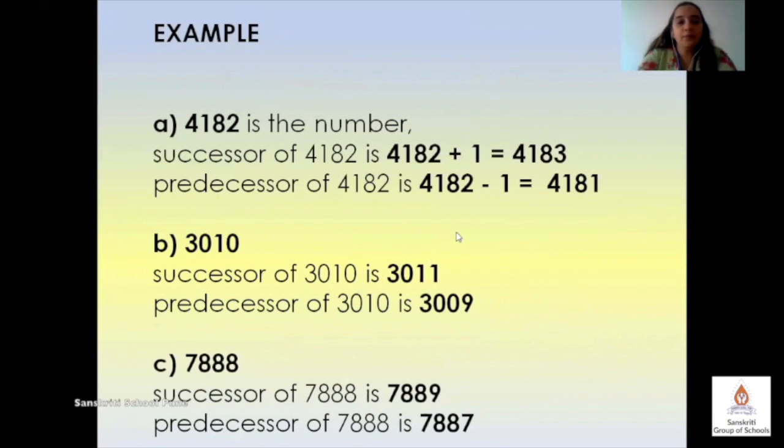Now here are some more examples. Look at this number here. It is 4182. To find its successor, simply add 1 to it and you would get the answer 4183. To know its predecessor, you have to subtract 1 from it and you will get the predecessor 4181. Now read the other examples carefully.